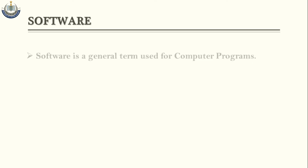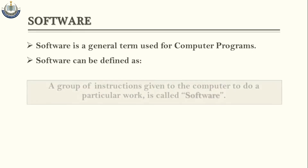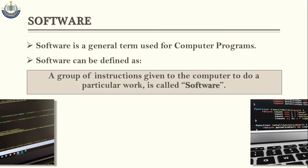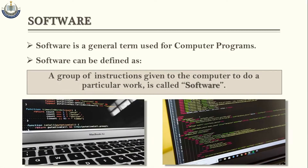Ab hum dekhte hain software kya hota hai. Asliyat mein, computer program hi ko software kaha jaata hai. Software can be defined as a group of instructions given to the computer to do a particular work. Computer ko koi bhi kaam karne ke liye di gayi instructions ka ek group software kehlata hai.